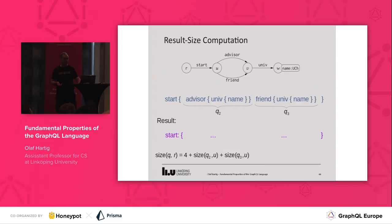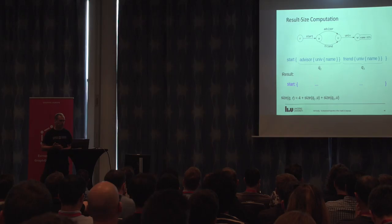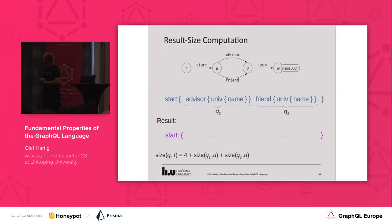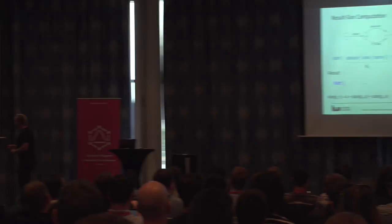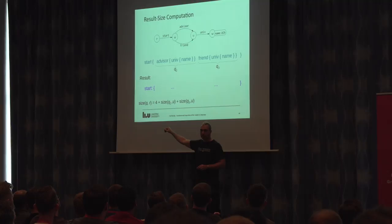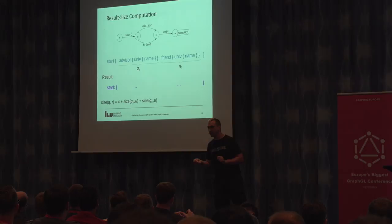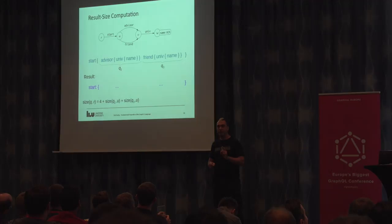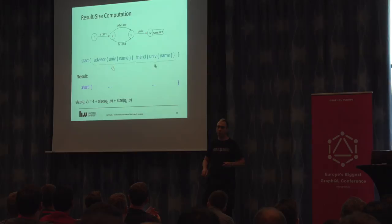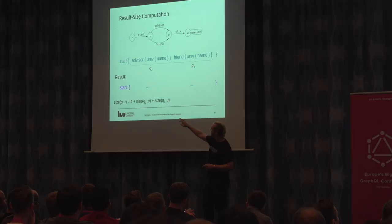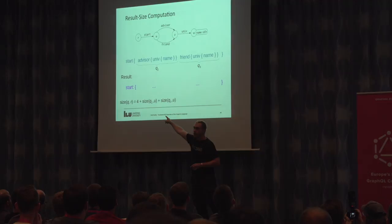I will use the rest of the time to show you based on an example how the algorithm works. I will use another graph now. On the left-hand side you have the query node. The blue line is our query — you see it has a start field and then it has two subqueries. What we want to compute is the size of this query when executed starting at the query node R. The way we measure size is based on the number of symbols the result will have: every field name counts as one symbol, every scalar value counts as one symbol, and all the special characters also count as one symbol.